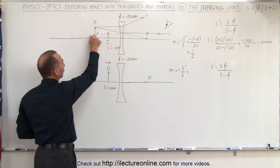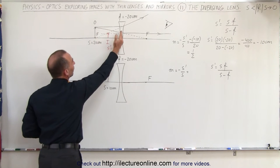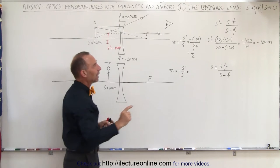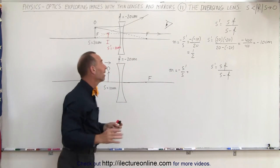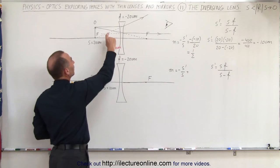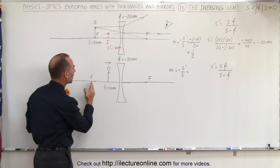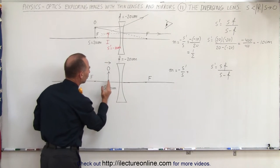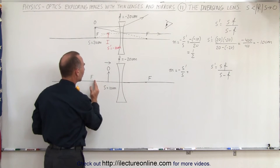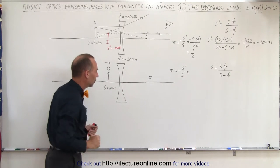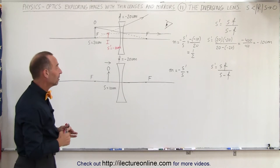When the object is at the focal point, the image forms at the halfway point between the lens and the focal point, and the magnification will be exactly one half, which means the image will be half the size of the object. Now what happens when we bring the object even closer? We're going to put the object at the halfway point between the lens and the focal point. The object distance is now 10 centimeters.